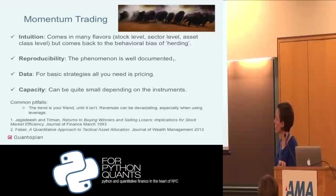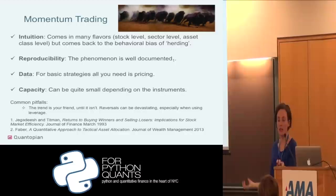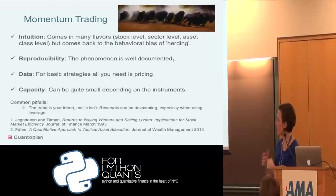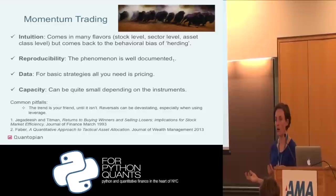Next, momentum trading. The intuition behind a momentum trade is looking for the behavioral bias of herding. When a stock, sector, or industry is doing well, there may be underlying information driving that price appreciation, and that information disseminates at a much slower rate than efficient market theory might suggest. This phenomenon is well documented. There are still corners of the market, especially in small-capacity strategies, where momentum works — there's a reason it's still one of the main factors in large multi-factor quant models.